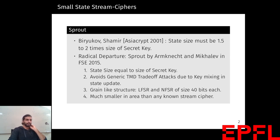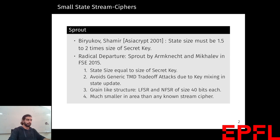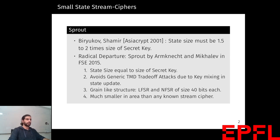But in 2015, at FSE, Armijek and Mikhelev proposed Sprout, which kind of contradicted the results by Shamir, because it had a state size exactly equal to the size of the secret key. But they were using some key-mixing method to get rid of these trade-off attacks. Sprout has a grain-like structure, meaning that the internal state is composed of an LFSR and an NFSR, both of size 40 bits, and it has a much smaller area than any other known stream cipher.